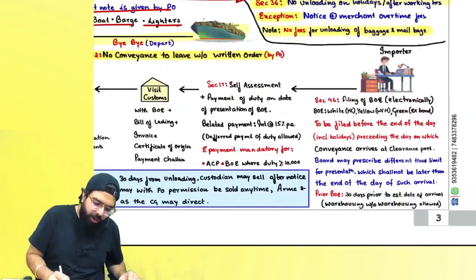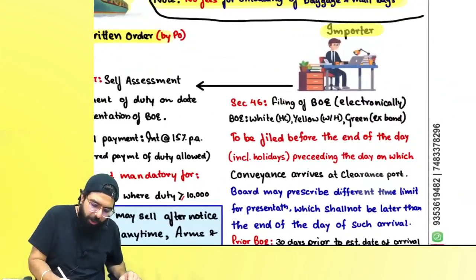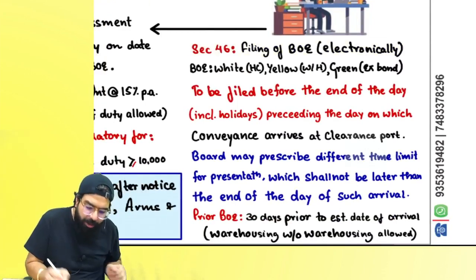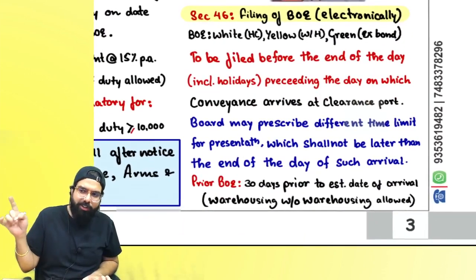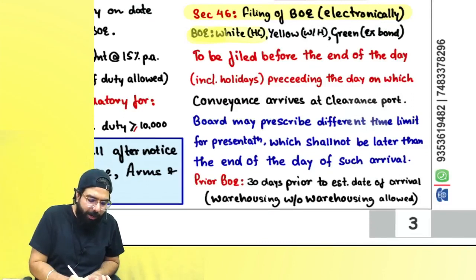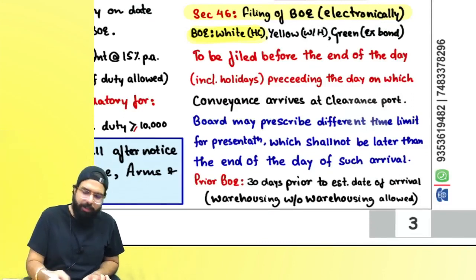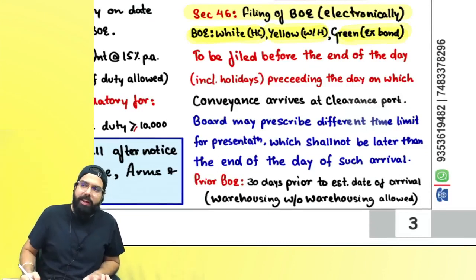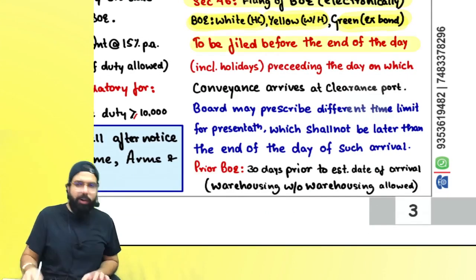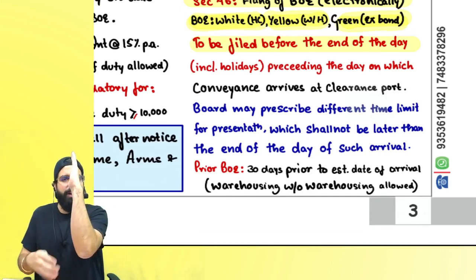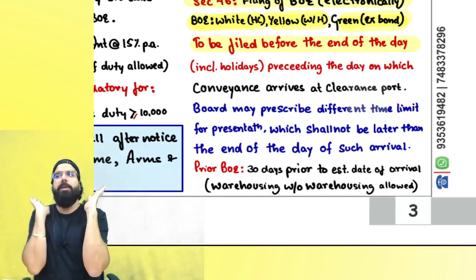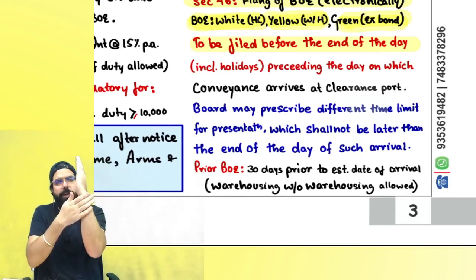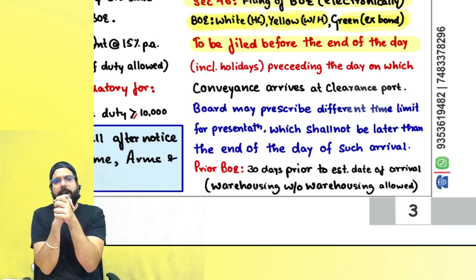Now your goods are with the custodian and you want to release them. As the importer, you will have to file a bill of entry electronically on icegate.gov.in. A white bill of entry is for home consumption, yellow if you want to put goods in a warehouse, and green (ex-bond bill of entry) when clearing from the warehouse. The bill of entry should be filed by the end of the day preceding the day on which the goods arrive — including holidays.